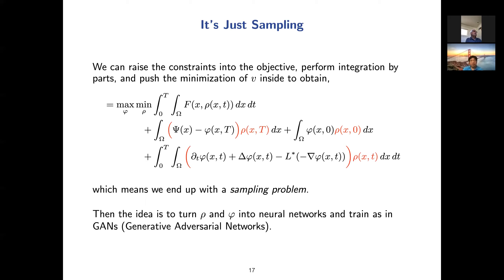Using KKT conditions and integration, we wind up with a min-max problem. You maximize over phi and minimize over rho, ending up with a sampling problem. The key idea — basically due to Alex — is to turn rho and phi into neural networks and train using a generalized generator of adversarial networks (GANs).